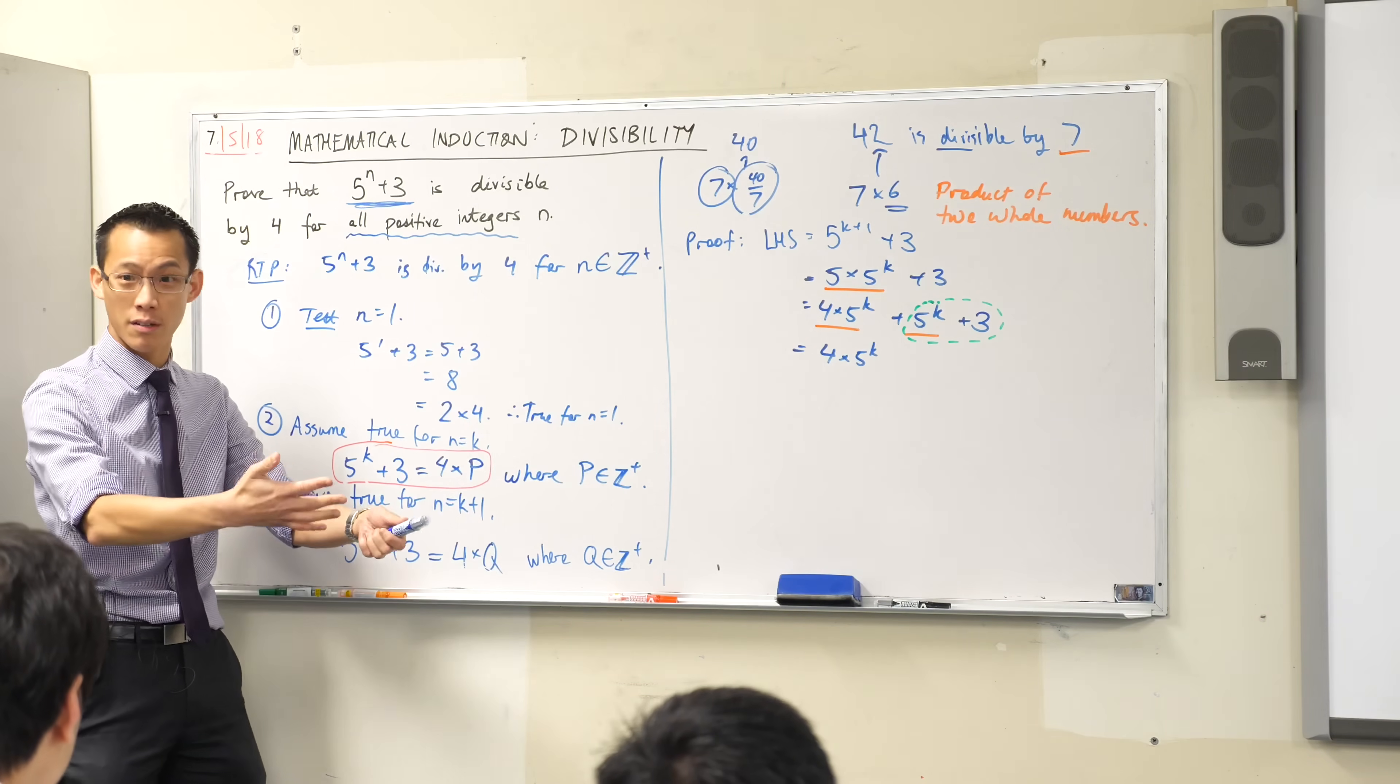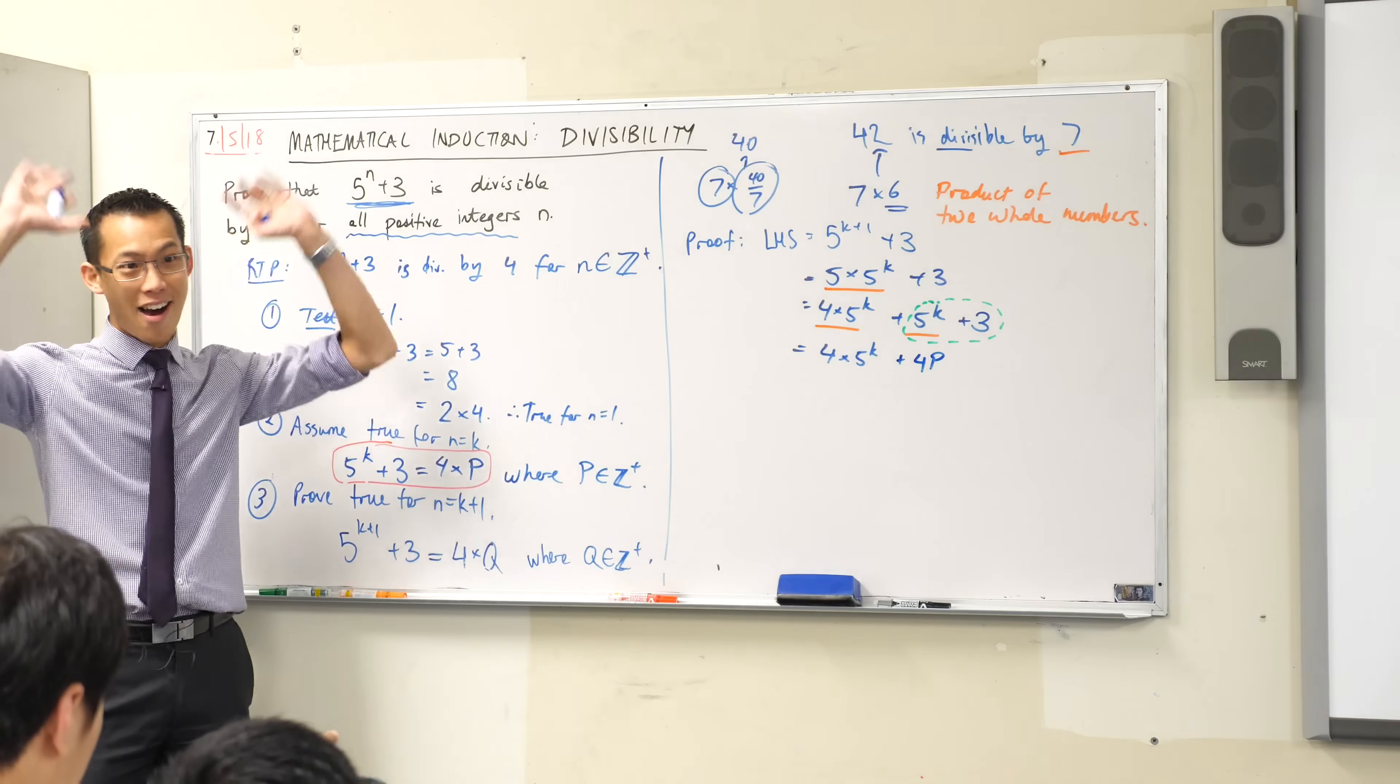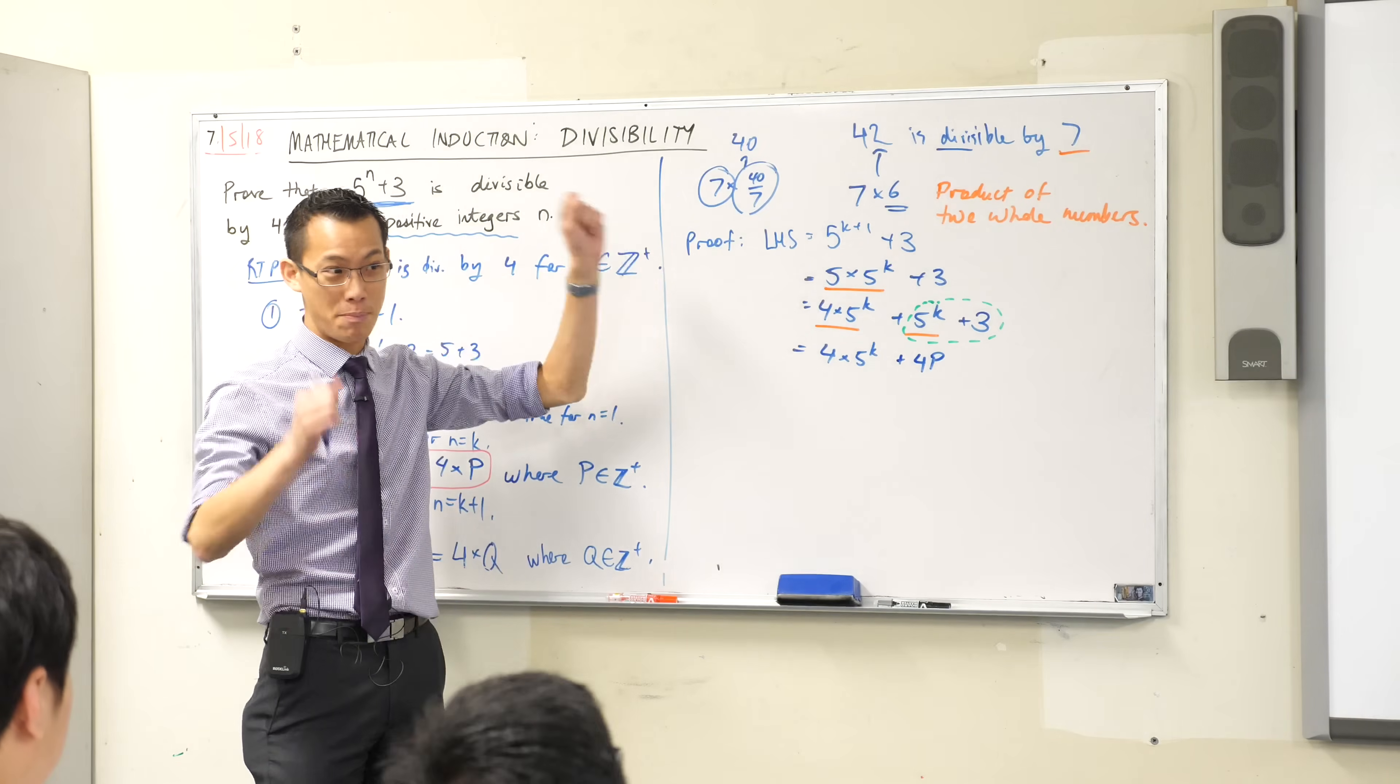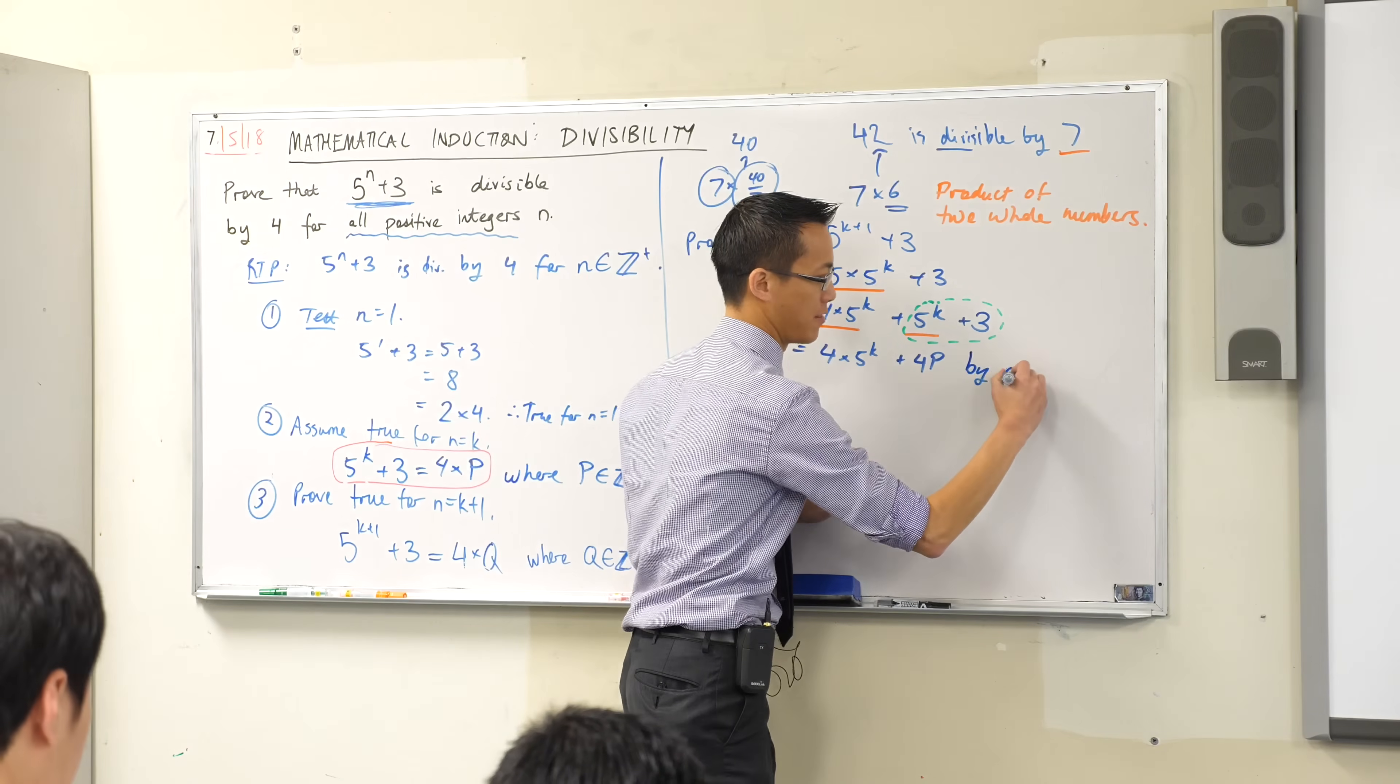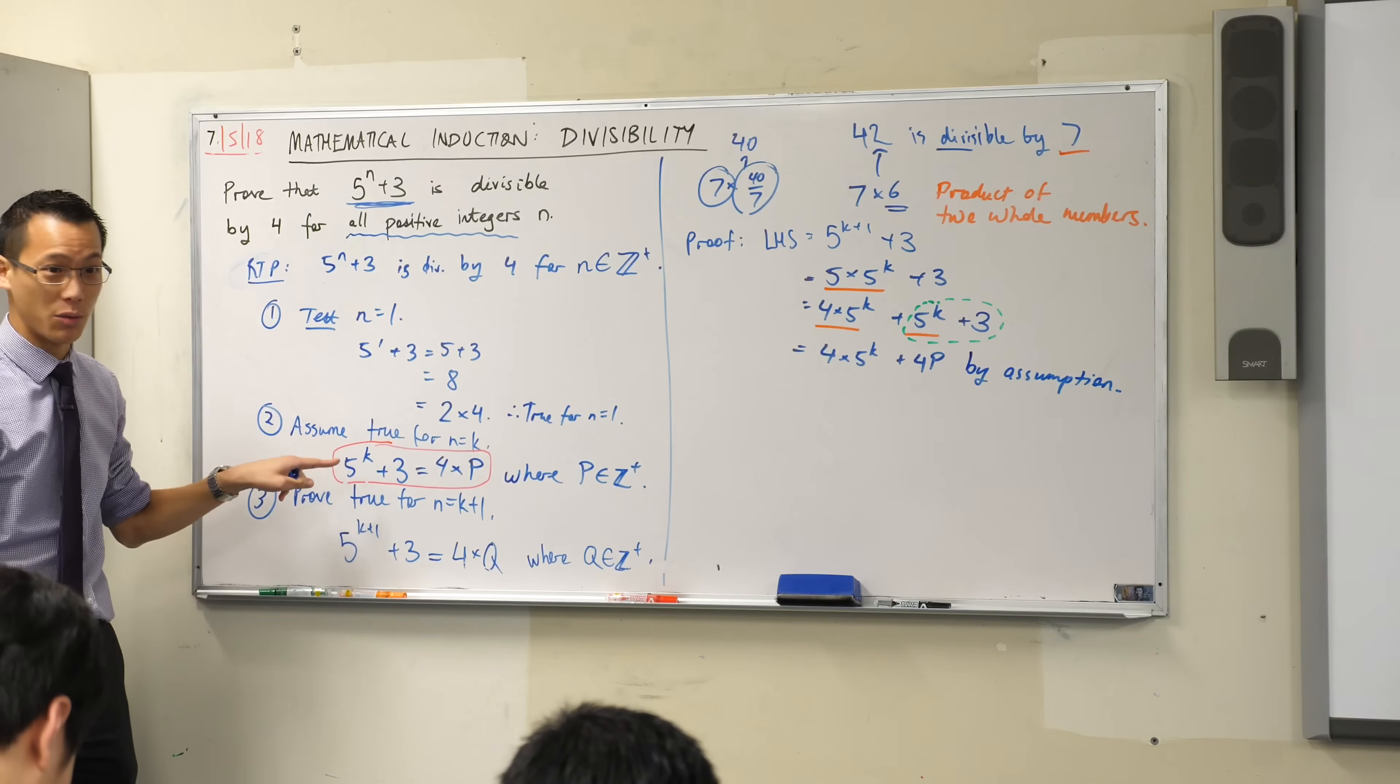So, I'm going to substitute it for a multiple of 4, namely this. Right? So I've done my substitution, now to highlight, because this is a proof by mathematical induction, what am I going to do here now that I've used the assumption? I'm going to put big flashing lights, right? I'm going to wave a flag and I'm going to say, hey, by assumption. Because that's, after all, what I did. I assumed that something was true.